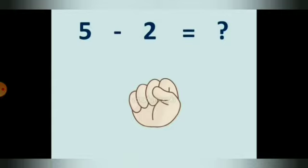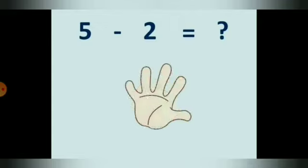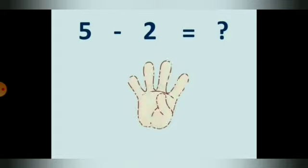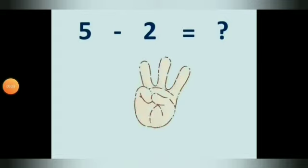Here we have to subtract 2 from 5. So, put out your 5 fingers. Yes. Now put down your 2 fingers. 1, 2. How many fingers are left? 1, 2, 3. So, 5 minus 2 is equal to 3.